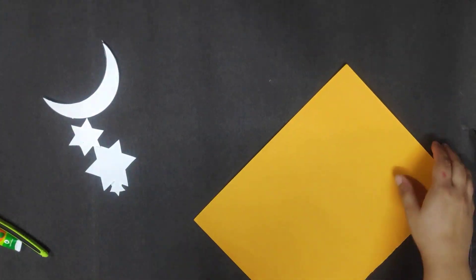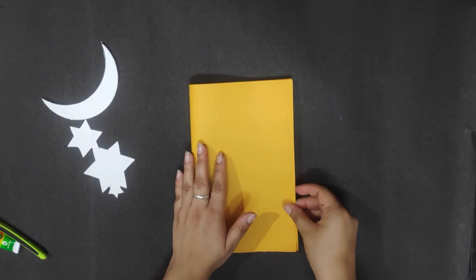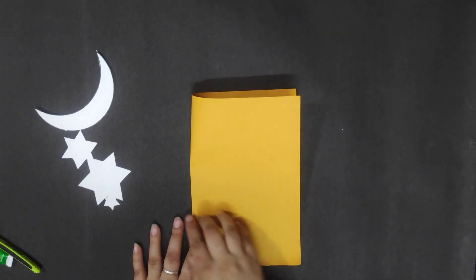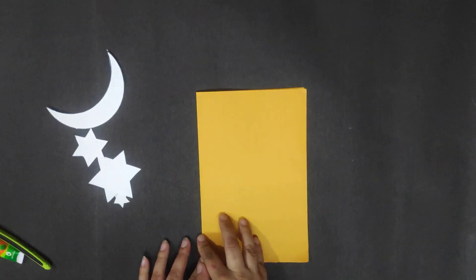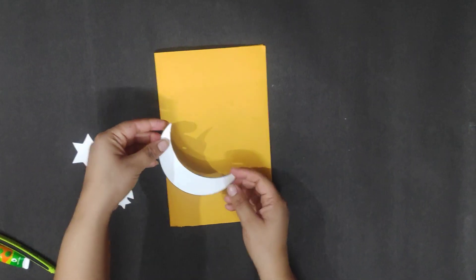Take another sheet and fold it into half. Now put your moon and stars cutting on the paper.